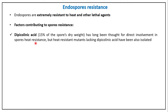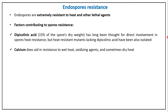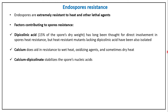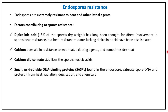Calcium, which forms a complex with DPA, adds resistance to wet heat, oxidizing agents, and sometimes dry heat. The calcium-DPA complex also stabilizes the spore's nucleic acid. Small acid-soluble DNA-binding proteins (SASPs) saturate the spore DNA and protect it from heat, radiation, desiccation, and chemicals.